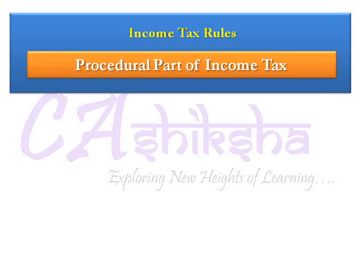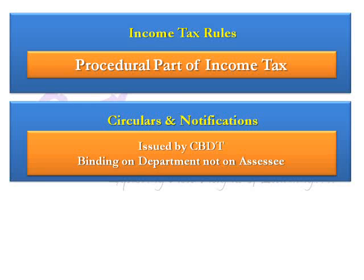For proper administration of the Income Tax Act, it gives powers to the CBDT — that is, the Central Board of Direct Taxes — to frame rules. These rules are called the Income Tax Rules 1962. The rules comprise the procedural part of income tax law and are subordinate to the Income Tax Act. From time to time, CBDT issues various directions to deal with specific problems or to clarify doubts on certain provisions. These are in the form of circulars and notifications.